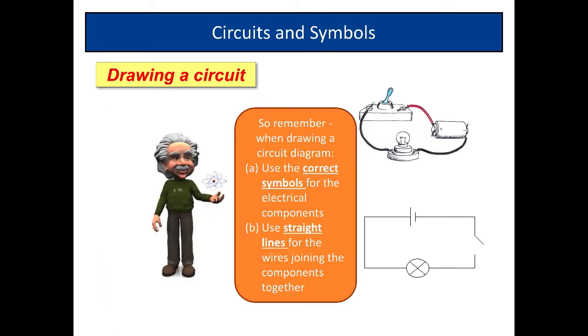So remember, when drawing a circuit diagram, first of all, always use the correct symbols for the components. Here we have a correct symbol for a cell, here's a correct symbol for a bulb, and there's a correct symbol for the switch. And also use straight lines for the wires that you'll use to join the components together.